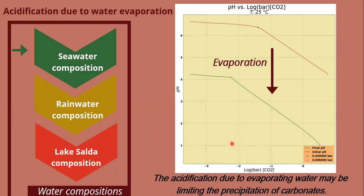This plot is from the seawater composition. On the x-axis you can see the partial pressure of CO2, and on the y-axis you can see the pH. As you can see, when you have higher values of partial pressure of CO2, the pH becomes more acidic. However, we also discovered that after evaporation the pH seems to decrease too, so we think that probably more processes are involved in this.